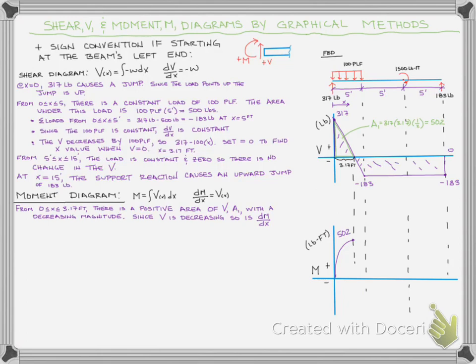We've got our zero to 3.17 feet. Now we need to start looking at the next areas because we're just going to keep summing areas as we move along to 15 feet. Area two is that negative triangle: negative 183 times 1.83 feet (what's left of the 5 feet), times a half because it's a triangle, and that's going to give us negative 167. Then we have that lower rectangle, which I'm going to break into two areas, A3 and A4.